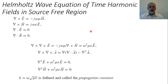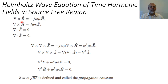We have seen how to represent Maxwell's equations in time-harmonic fields. Using the constitutive relations between the electric flux density and electric field, and magnetic flux density and magnetic field, we obtained Maxwell's equations in terms of the electric and magnetic fields only. Assuming free space with no sources — no electric current, no magnetic current, no electric charge — the curl of E equals minus j-omega-mu H, the curl of H equals j-omega-epsilon E, and the divergences of both E and H are zero.